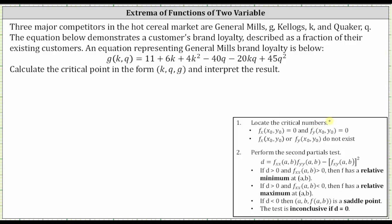The first step is to locate the critical numbers, which is where the first order partial derivatives are both equal to zero or do not exist. We begin by determining the partial of g with respect to k. To find it, we differentiate g with respect to k, treating q as a constant, which gives us zero plus six plus eight k minus zero minus 20q plus zero, or just six plus eight k minus 20q.